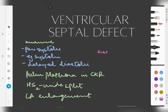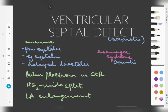So, Eisenmenger syndrome — which is a complication of ventricular septal defect — is a cyanotic disease, whereas the ventricular septal defect itself, by far, remains an acyanotic disorder. Thank you.